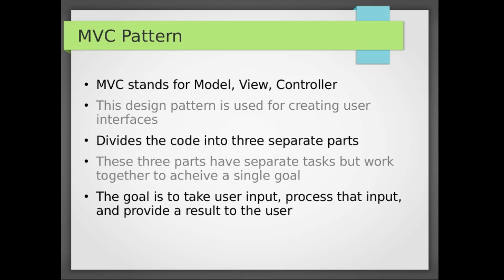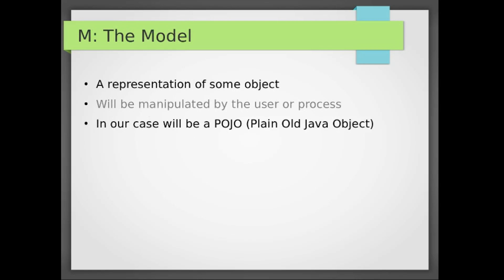The goal of the MVC pattern is to take user input, process the input, and provide a result to the user. The model portion of the MVC pattern is a representation of an object. In our case, this will be our database entries — that will be our object. The user will make a call to the REST API, the REST API will manipulate the model, and that's where the model comes in.